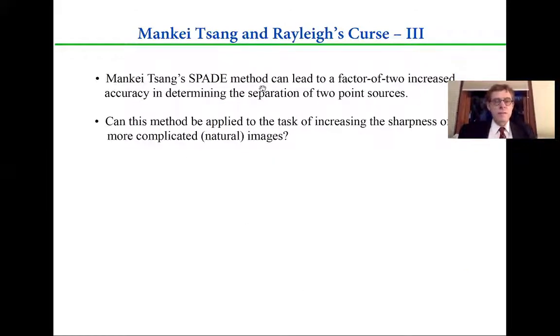So to summarize this, Mankei Tsang's SPADE method can lead to a factor of two increased accuracy in determining the separation of two point sources. But the question remains, can this method be applied to the task of increasing the sharpness of more complicated images, natural images? In one sense, you say, if you know all the separation between all the points in the image, you could maybe be smart enough to synthesize the actual image. So that's what people are working on today.